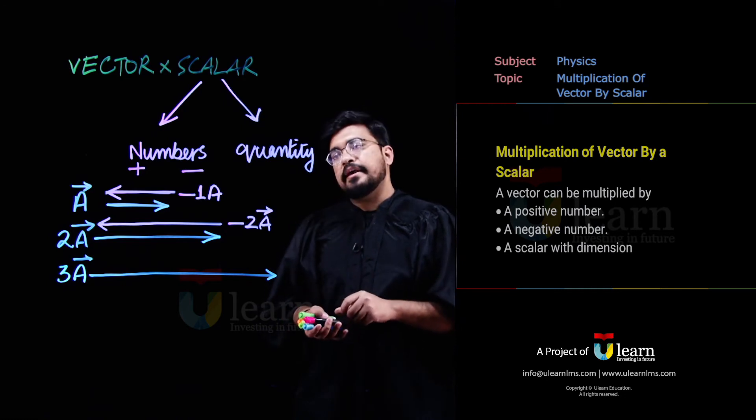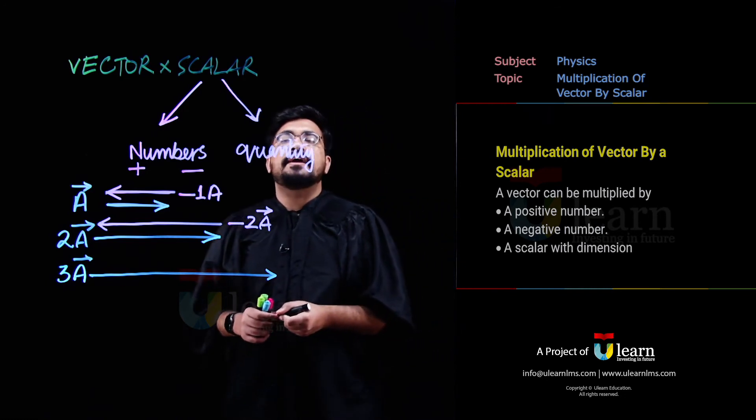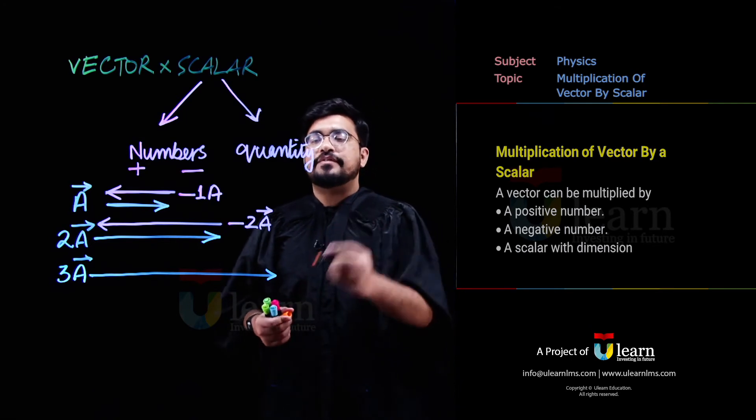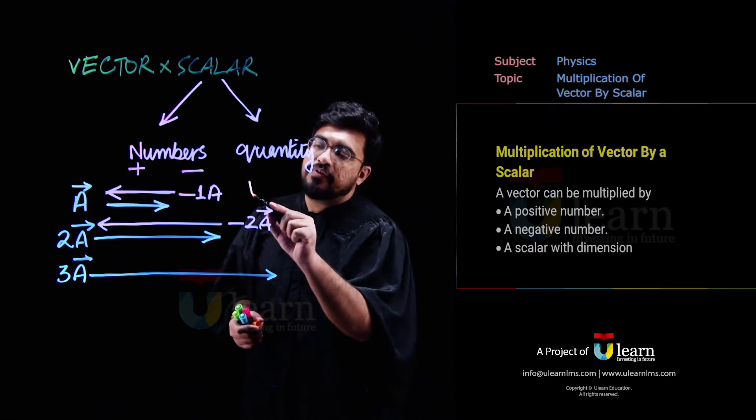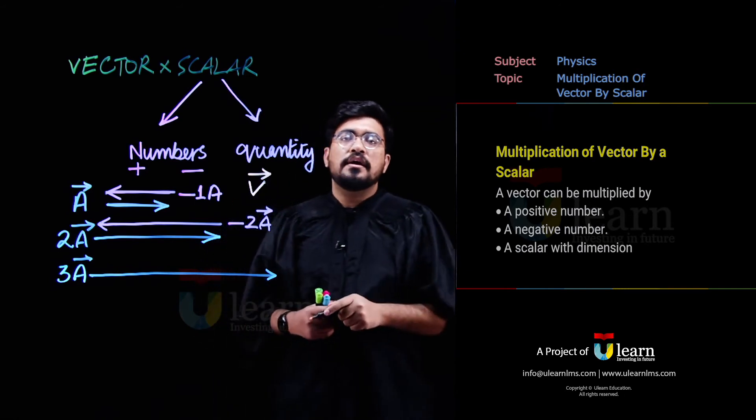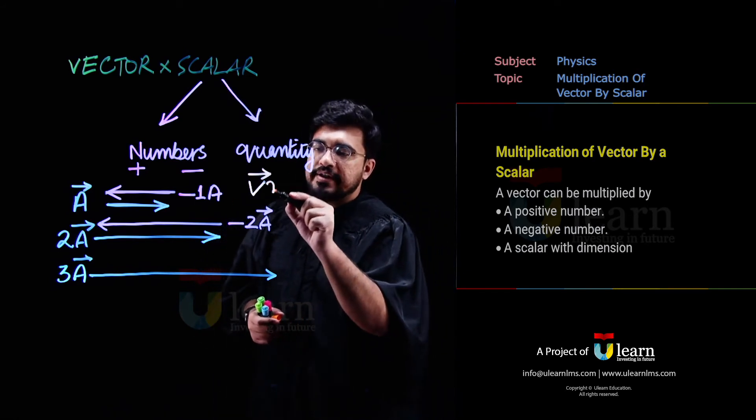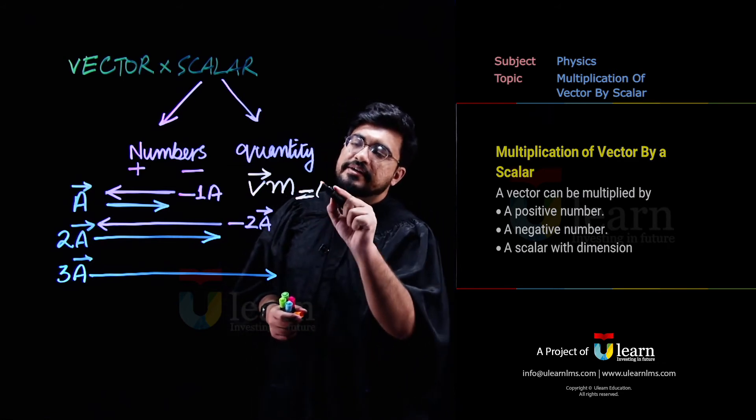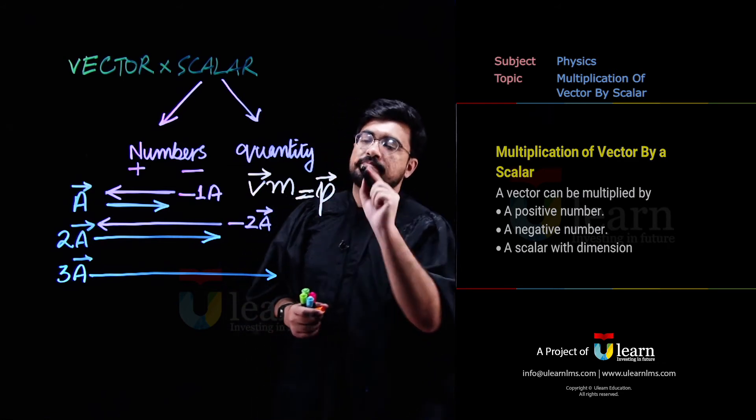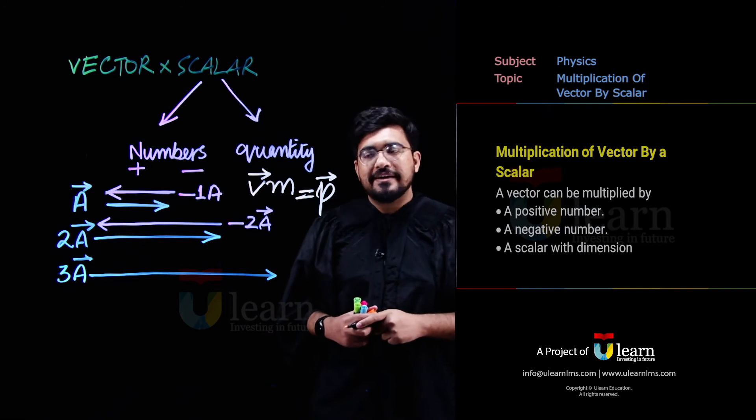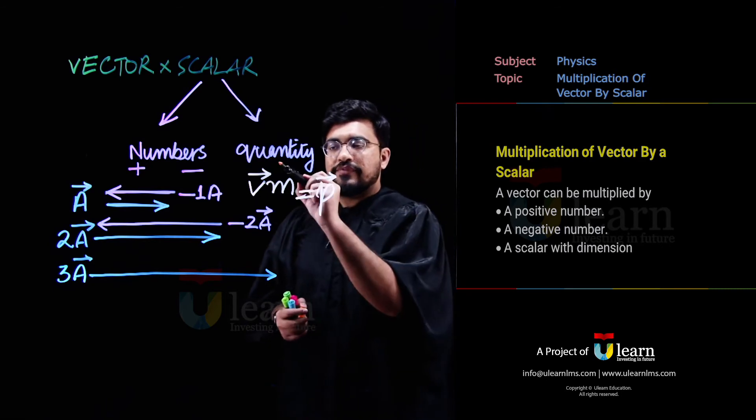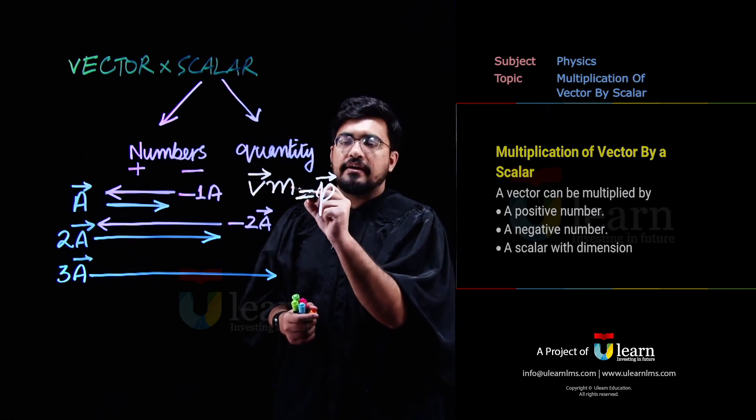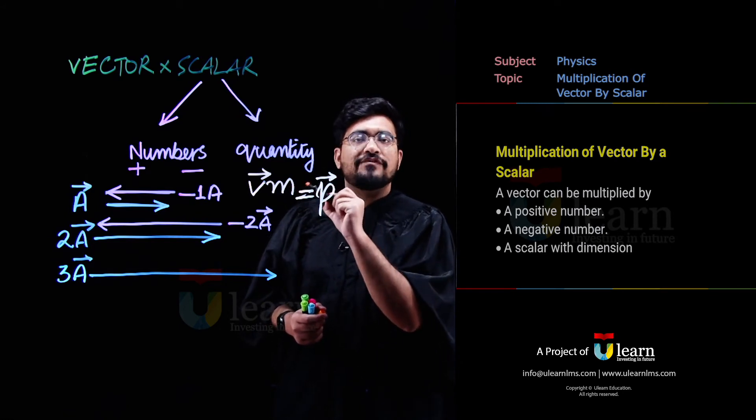Ab hum ye dekhte hai, ki what if, agar aap vector ko kisi ek scalar quantity se multiply kareo, jaise, mere paas ek vector hai, v vector, it's a velocity vector, agar mai isko ek scalar quantity se multiply kar doon, iska result aa jaata hai, momentum. Aapne kya kiya? Ek vector quantity ko ek scalar quantity se multiply kia, jawab aapke paas ek vector aya.